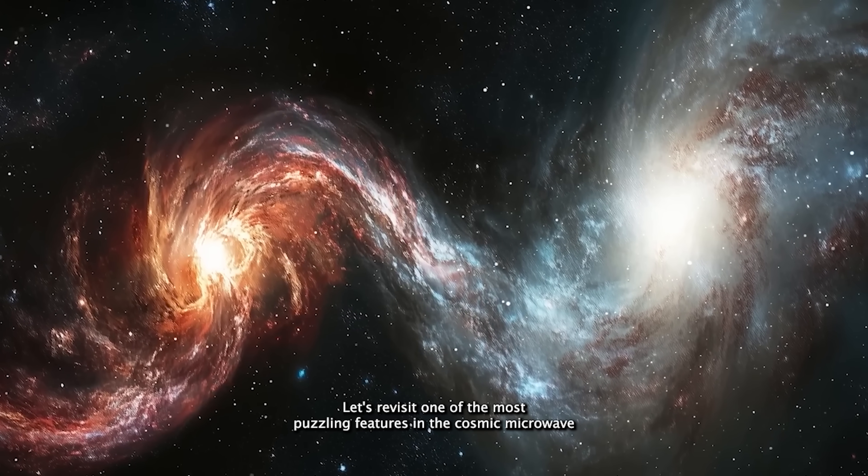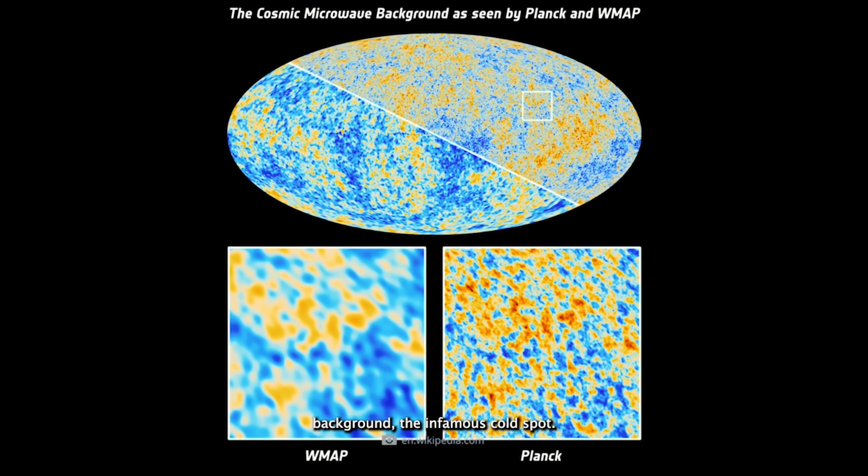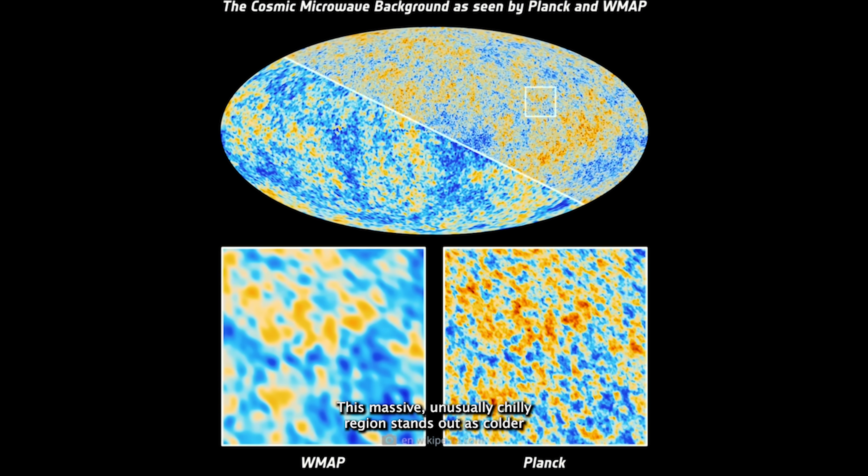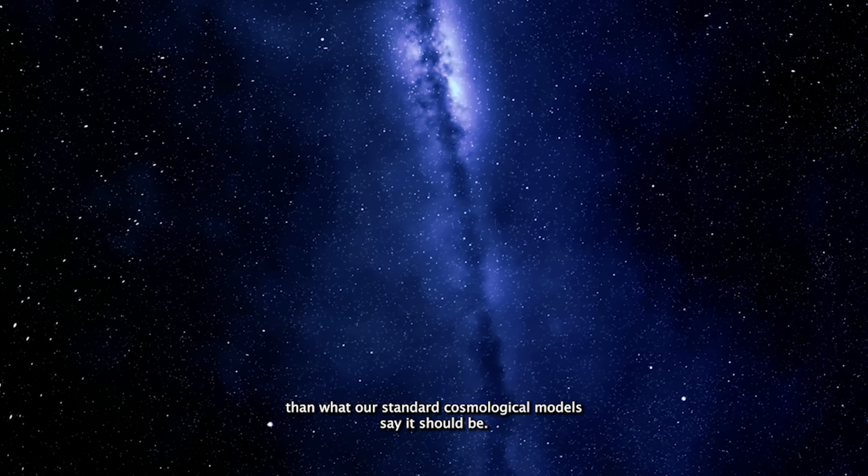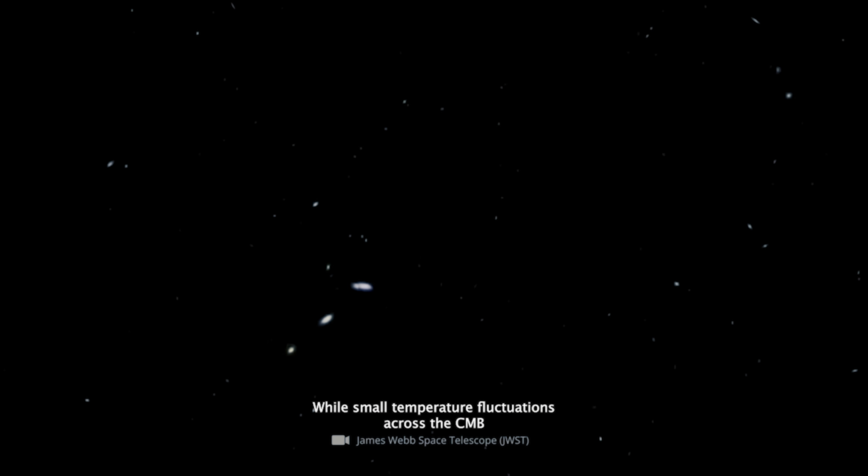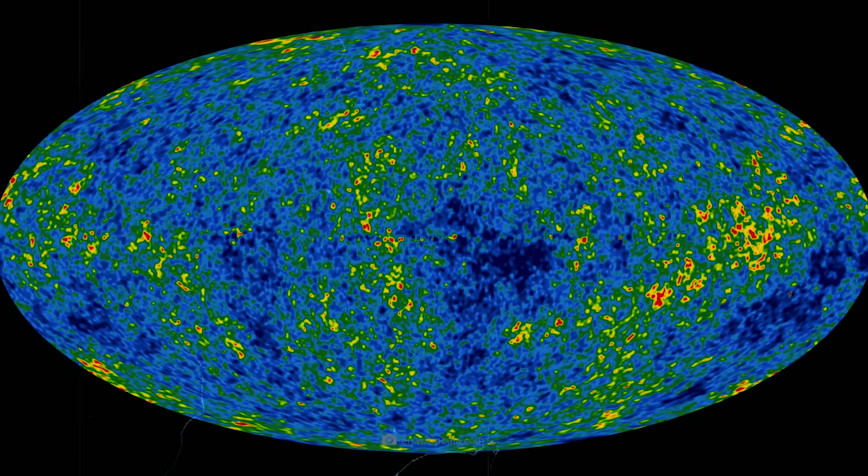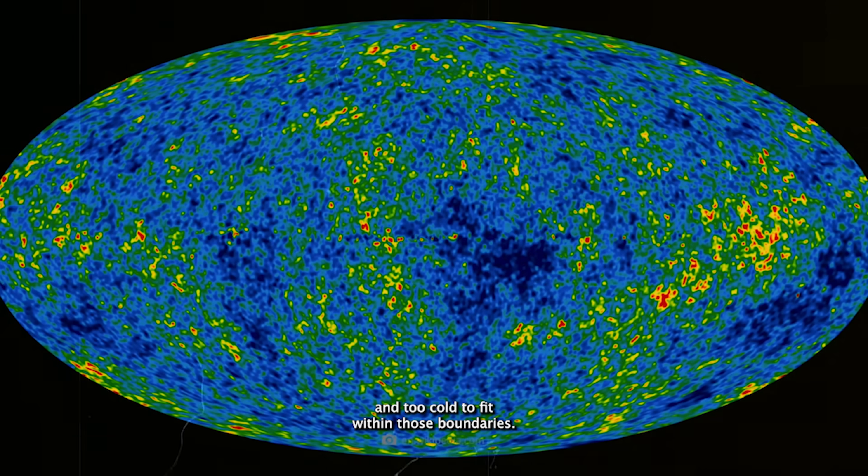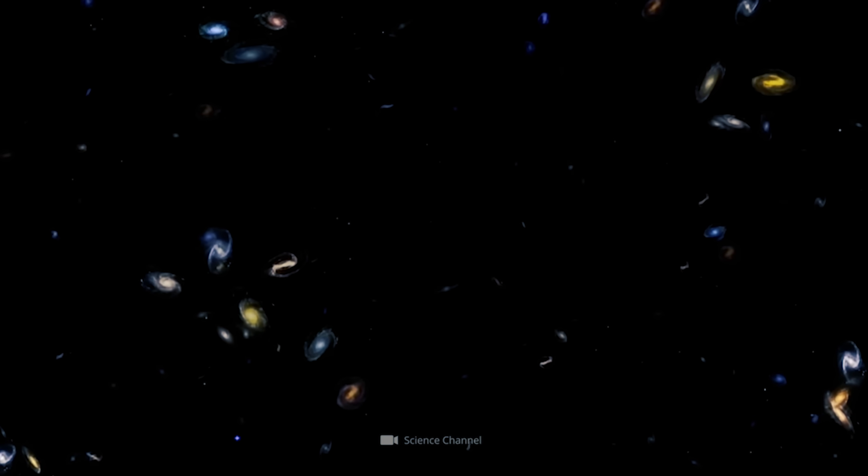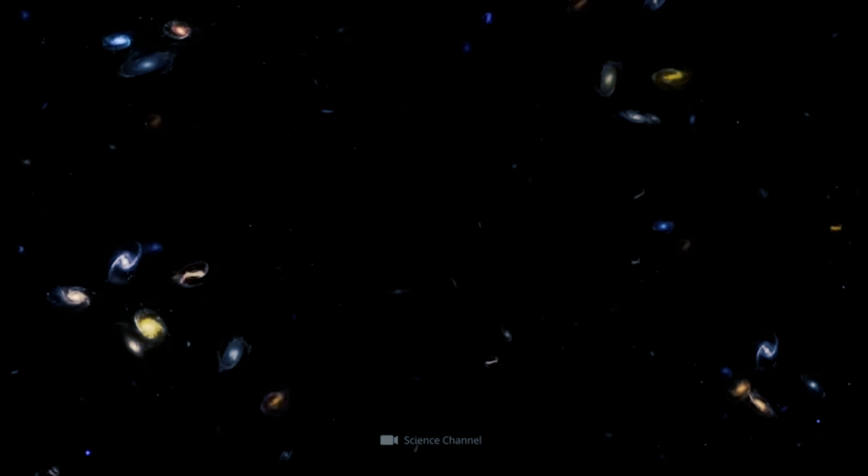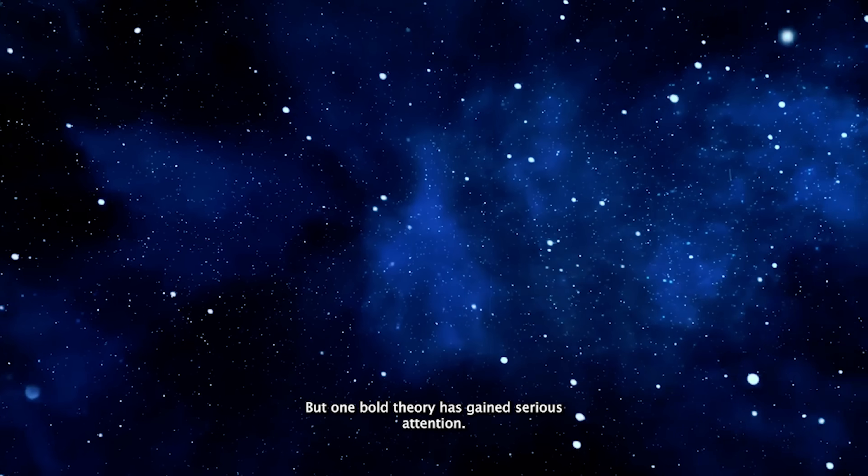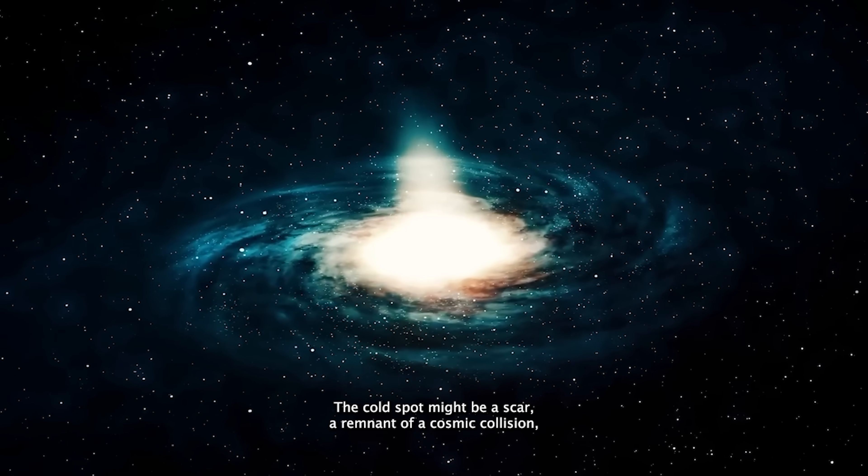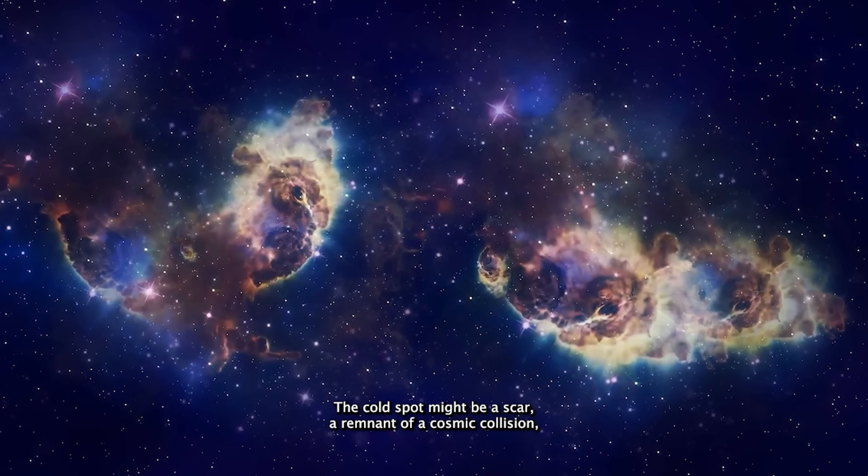Let's revisit one of the most puzzling features in the cosmic microwave background. The infamous cold spot. This massive, unusually chilly region stands out as colder than what our standard cosmological models say it should be. While small temperature fluctuations across the CMB are normal, caused by quantum jitters in the early universe, this cold spot is simply too vast and too cold to fit within those boundaries. Scientists have wrestled with this anomaly for years, and no conventional explanation quite fits. But one bold theory has gained serious attention. The cold spot might be a scar, a remnant of a cosmic collision. Not with an asteroid, but with another universe.